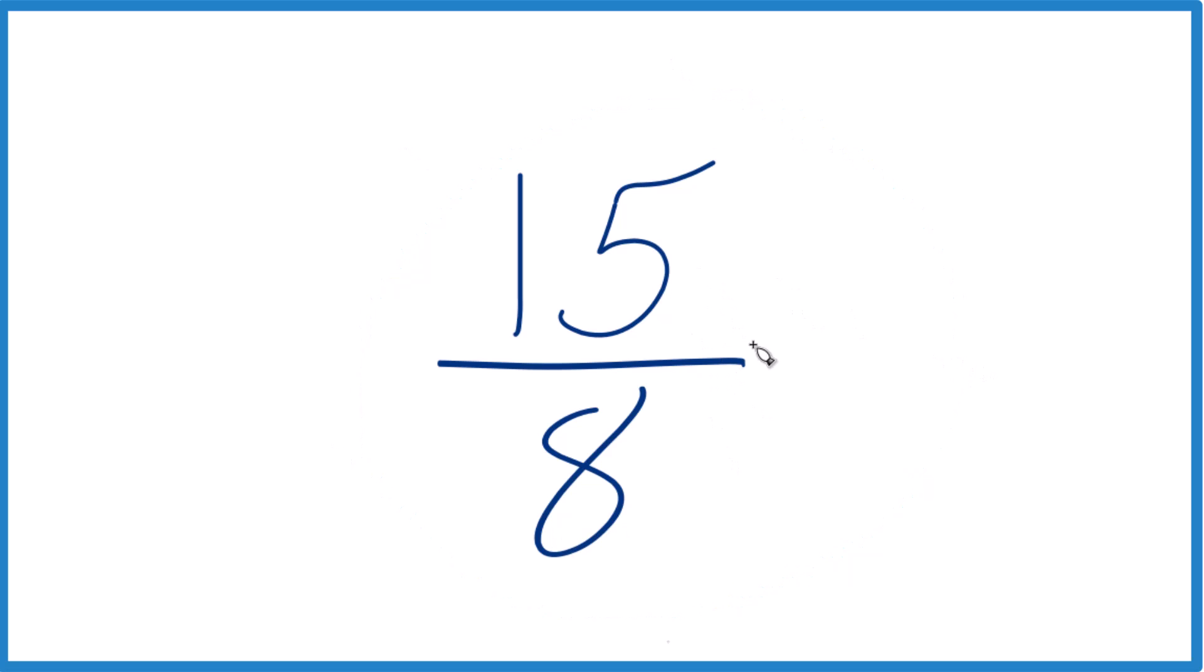To simplify a fraction, we want to find a whole number that goes into both 15 and 8 evenly. And really the only number that'll go into both 15 and 8 evenly is one.